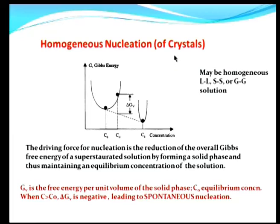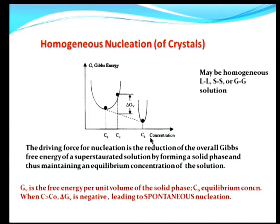Let us begin with homogeneous nucleation of crystals. What is homogeneous nucleation? We are talking about nucleation of crystals from either a liquid-liquid solution, a solid-solid solution, or even a gas or vapor solution. These are homogeneous ones, in contrast with heterogeneous nucleation whereby, for example, you can have nucleation occurring from the gas phase onto a solid phase, as in the chemical vapor deposition or CVD process. What is shown here is a graph of the Gibbs free energy versus concentration when we talk about a liquid-liquid solution — we have a solvent and a solute, and therefore we can talk about the concentration of the solute in the solvent.